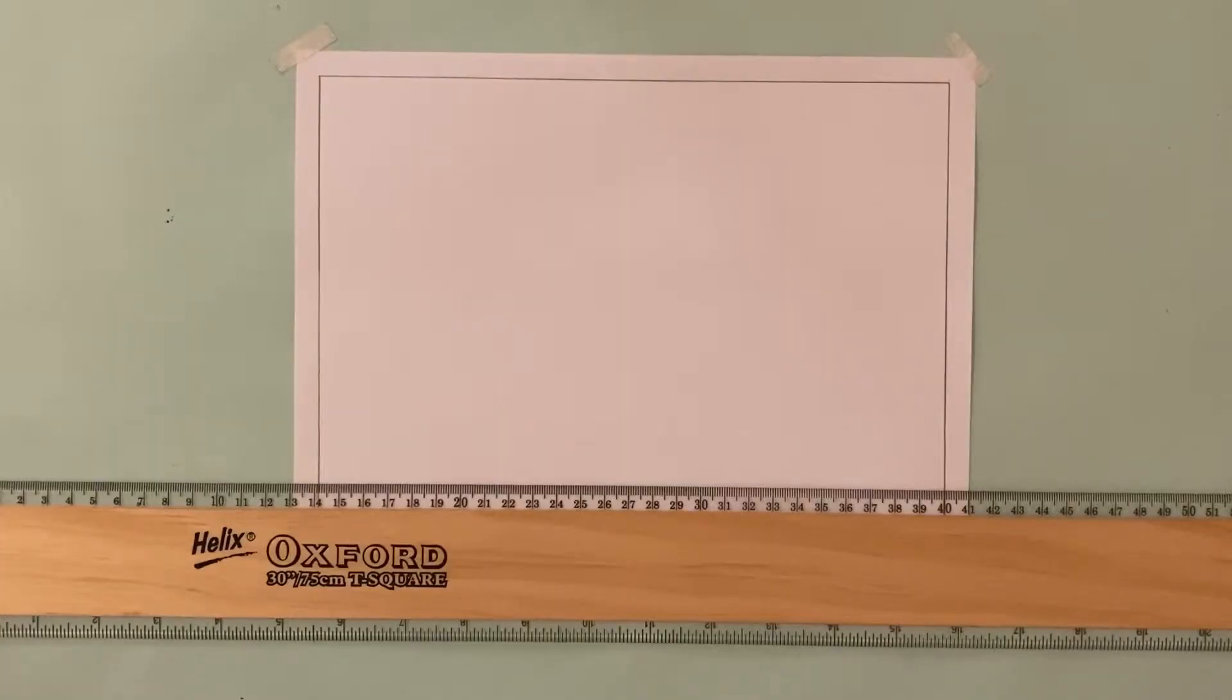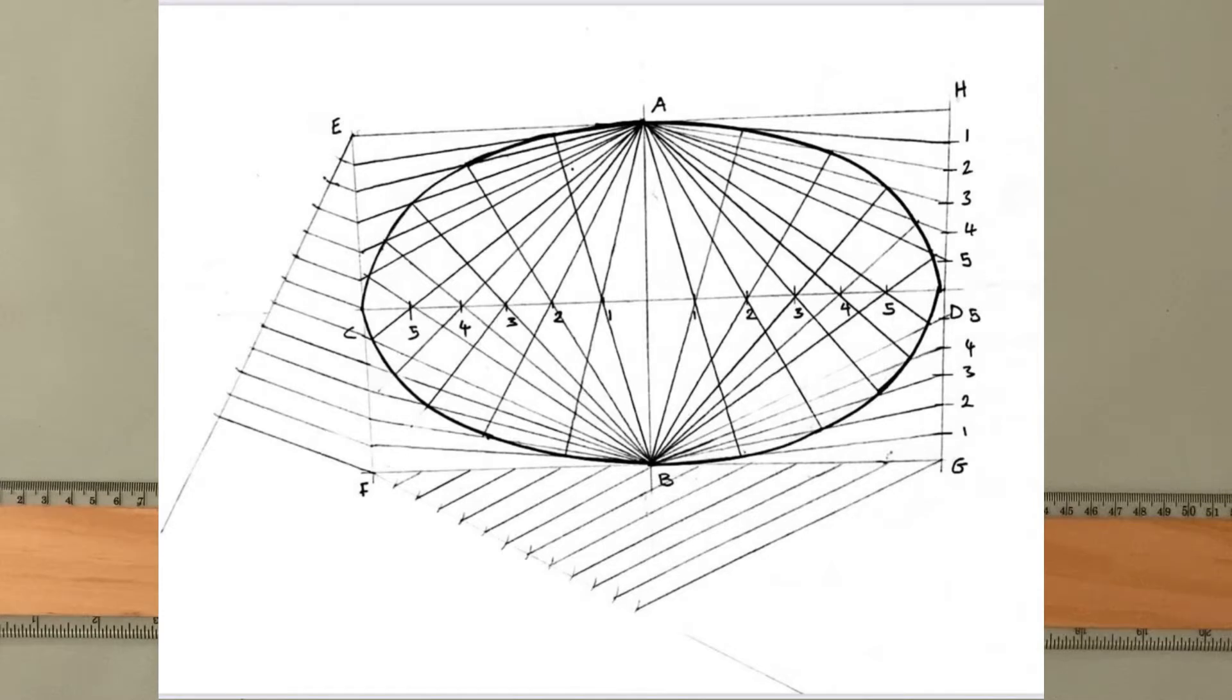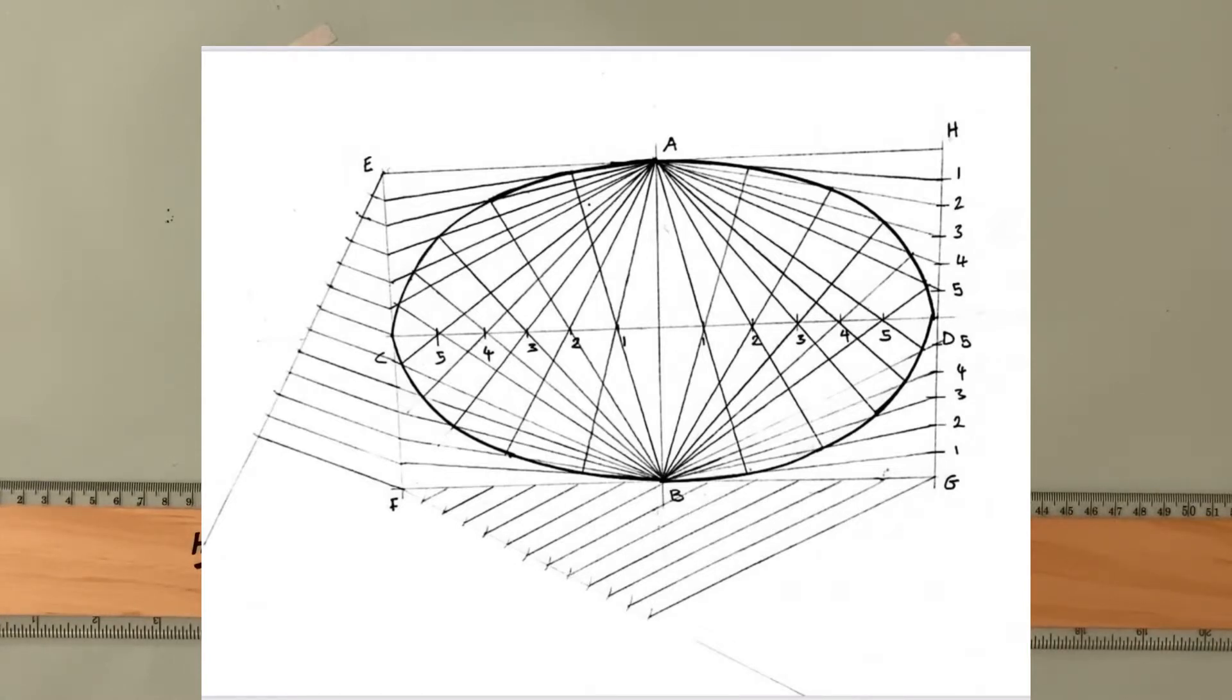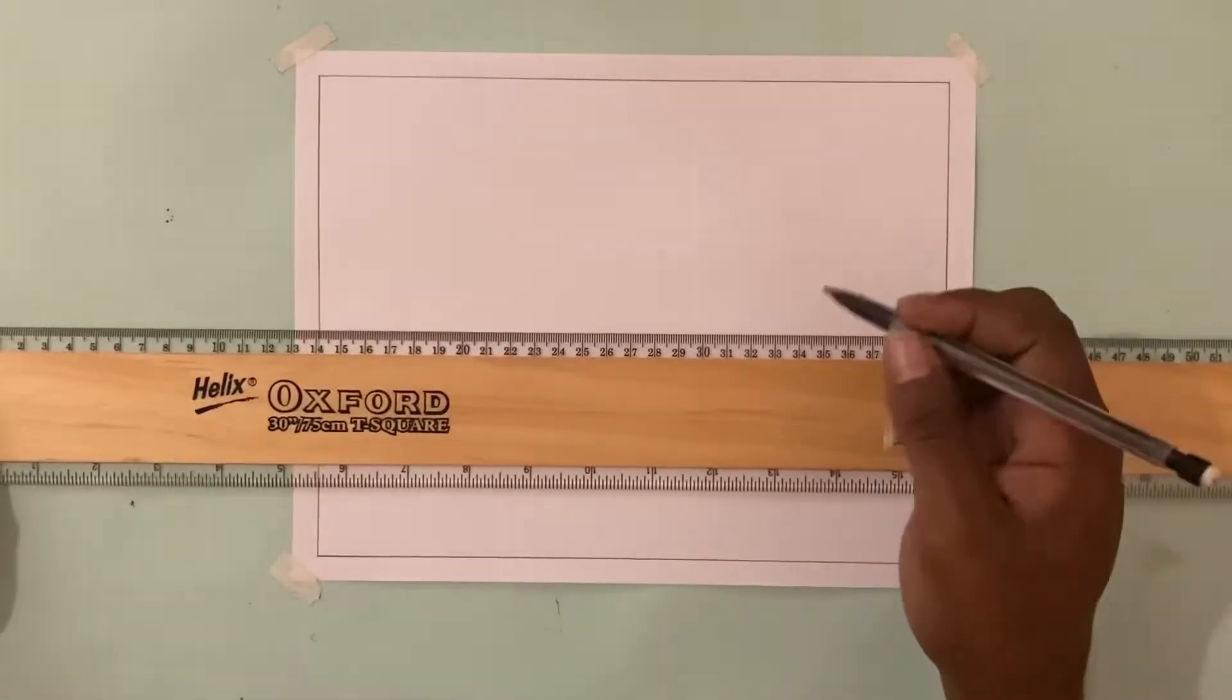The rectangle method. Now the rectangle we are working with has a width of 70 millimeters and a length of 120 millimeters. That will actually also serve as the minor and the major axis of our ellipse respectively. So let's go ahead and start today's drawing.